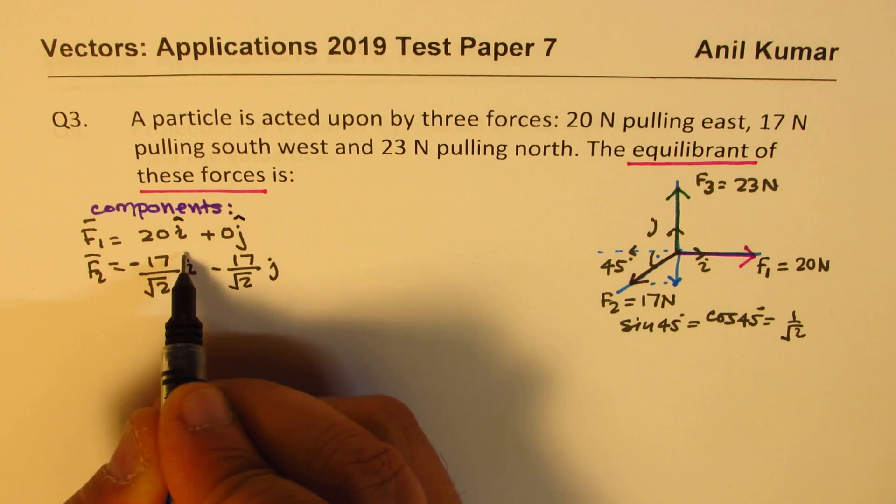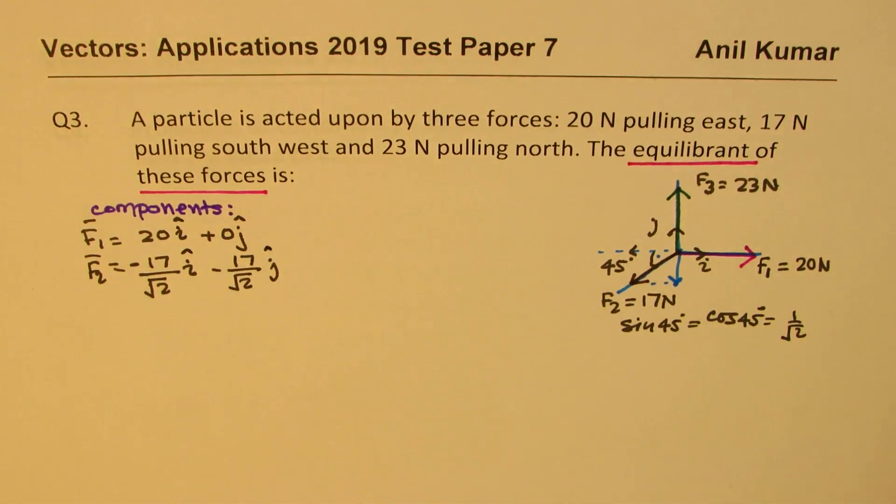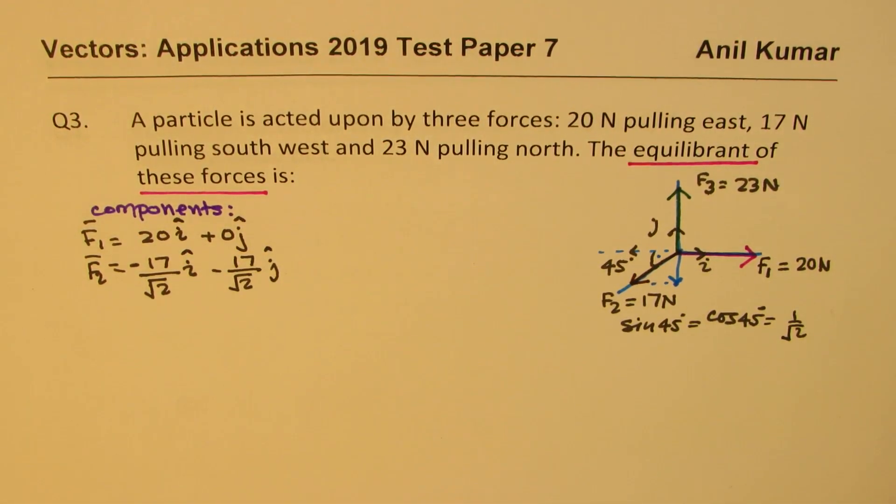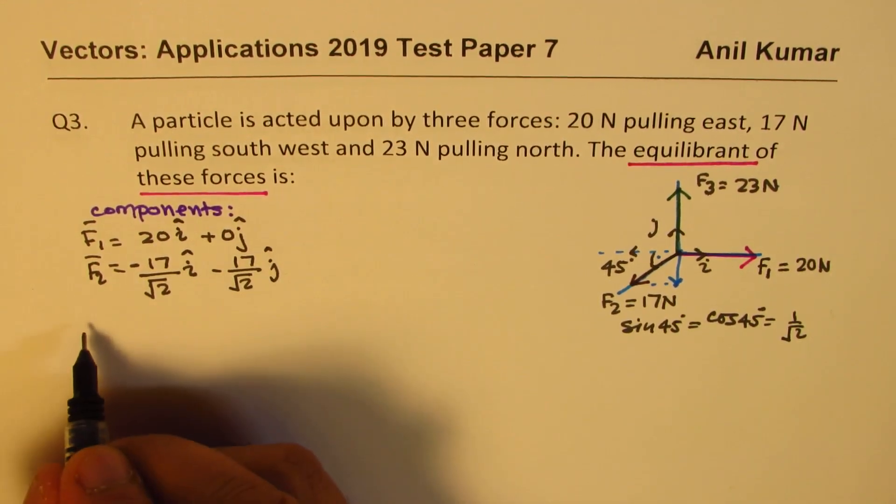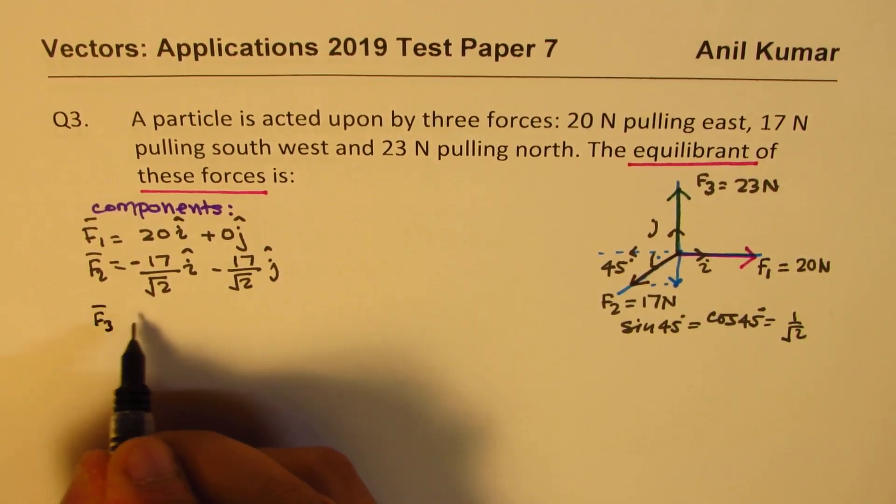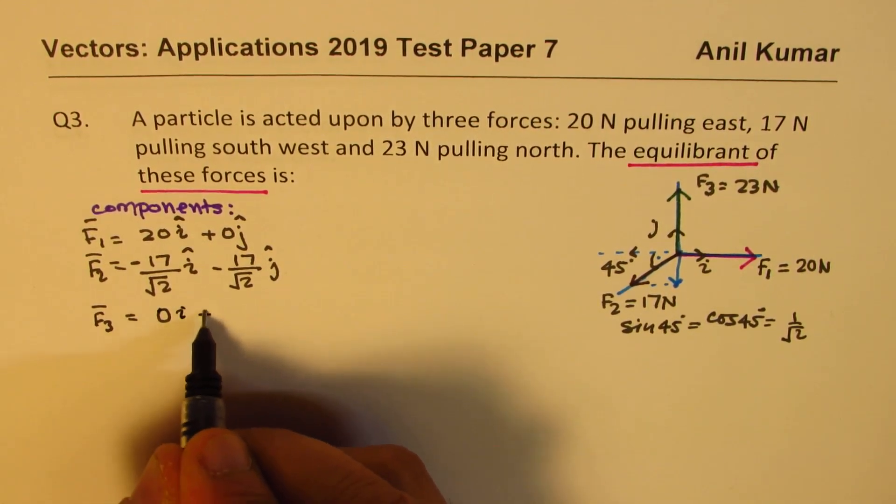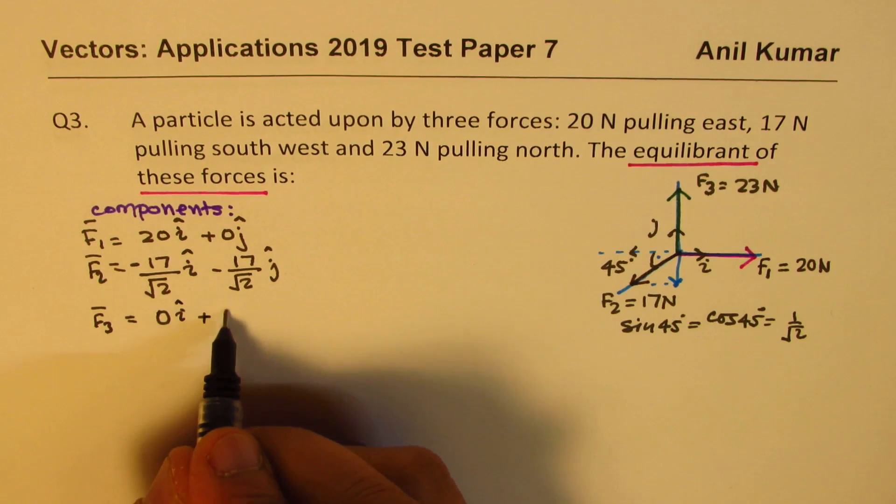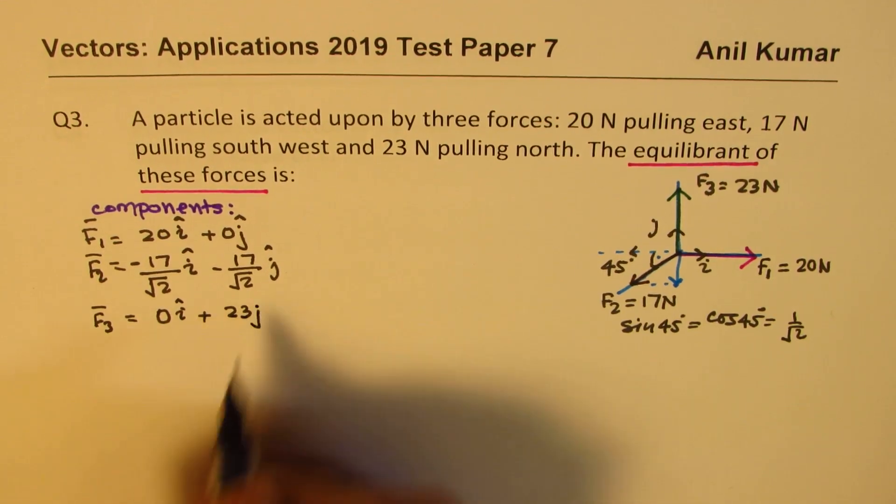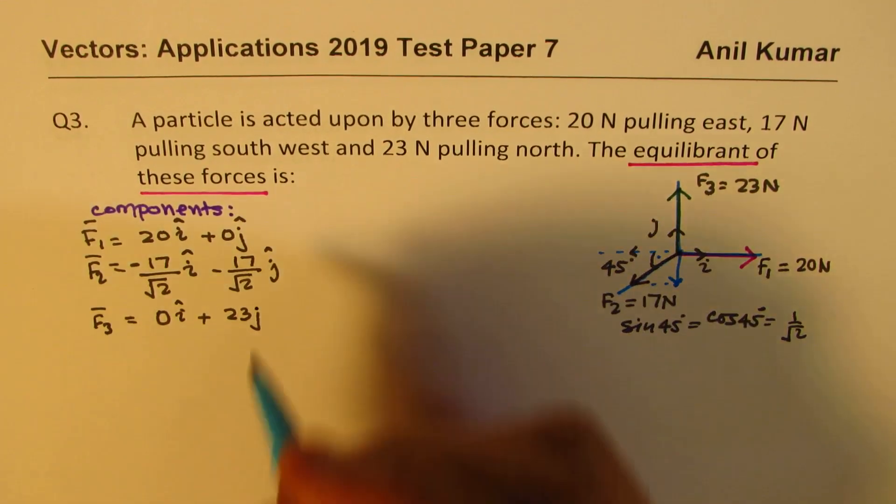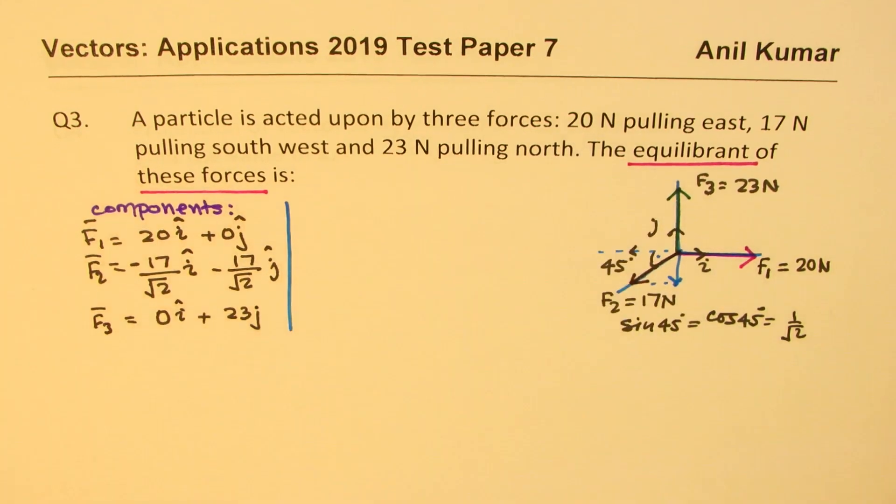So i and j are unit components, unit directions, x and y directions, unit vectors. F3 is north, which we'll take as j, so 0 along i plus 23 along j. So that is how we could resolve them into our components.